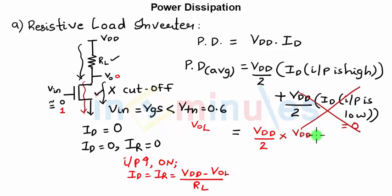So ID equals VDD by 2 into VDD minus VOL upon RL. This is the average static power dissipation in a resistive load inverter.